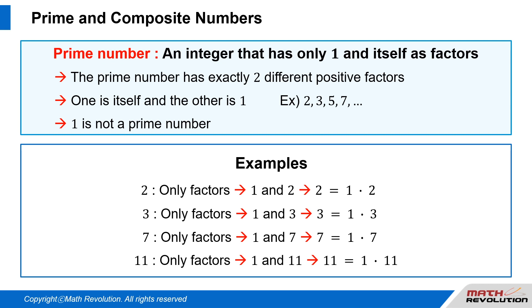Seven: only factors are one and seven, as 7 equals 1 times 7. Eleven: only factors are one and eleven, as 11 equals 1 times 11.